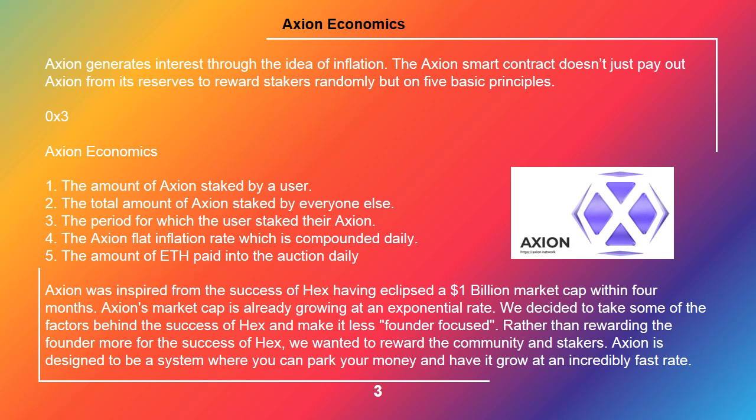Axion Economics: 1. The amount of Axion staked by a user. 2. The total amount of Axion staked by everyone else. 3. The period for which the user staked their Axion. 4. The Axion flat inflation rate, which is compounded daily. 5. The amount of ETH paid into the auction daily.